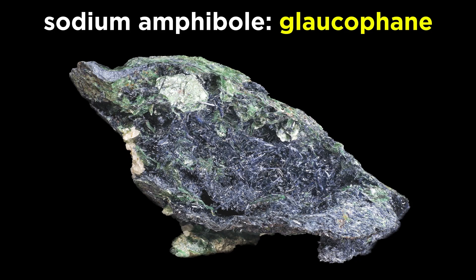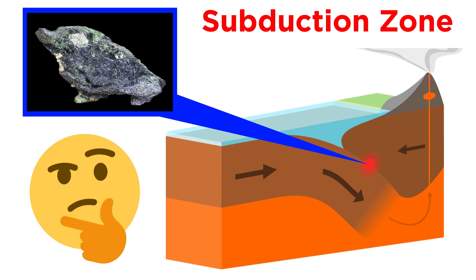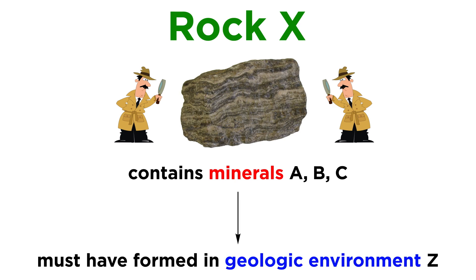For example, the sodium amphibole glaucophane is only formed at low temperatures and very high pressures, and since these conditions are almost exclusively found in subduction zones, you can reasonably assert that any glaucophane-containing rock formed there. This is how geologists use metamorphic facies in a nutshell: Rock X contains minerals A, B, and C, therefore it must have formed in geologic environment Z.